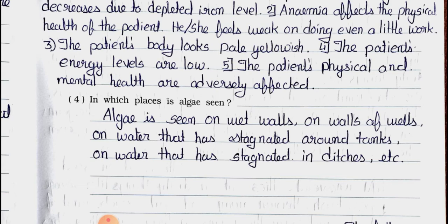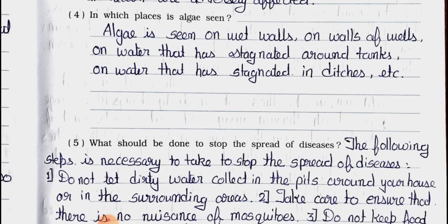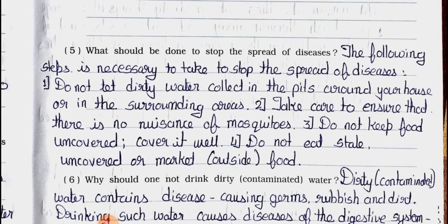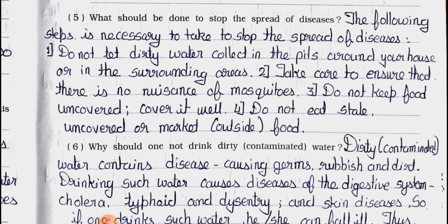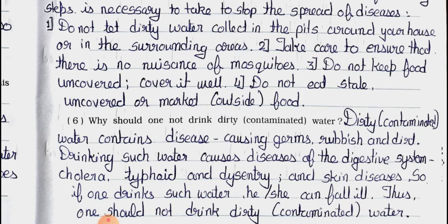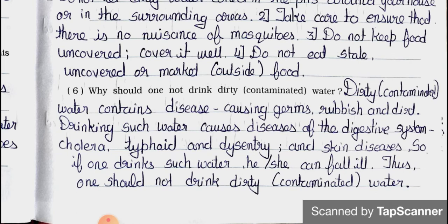Question 5: What should be done to stop the spread of disease? Answer: The following steps are necessary to stop the spread of diseases. Point 1: Do not let dirty water collect in pits around your house or surrounding areas. Point 2: Take care to ensure there is no nuisance of mosquitoes. Point 3: Do not keep food uncovered — cover it well. Point 4: Do not eat stale, uncovered, or outside market food.